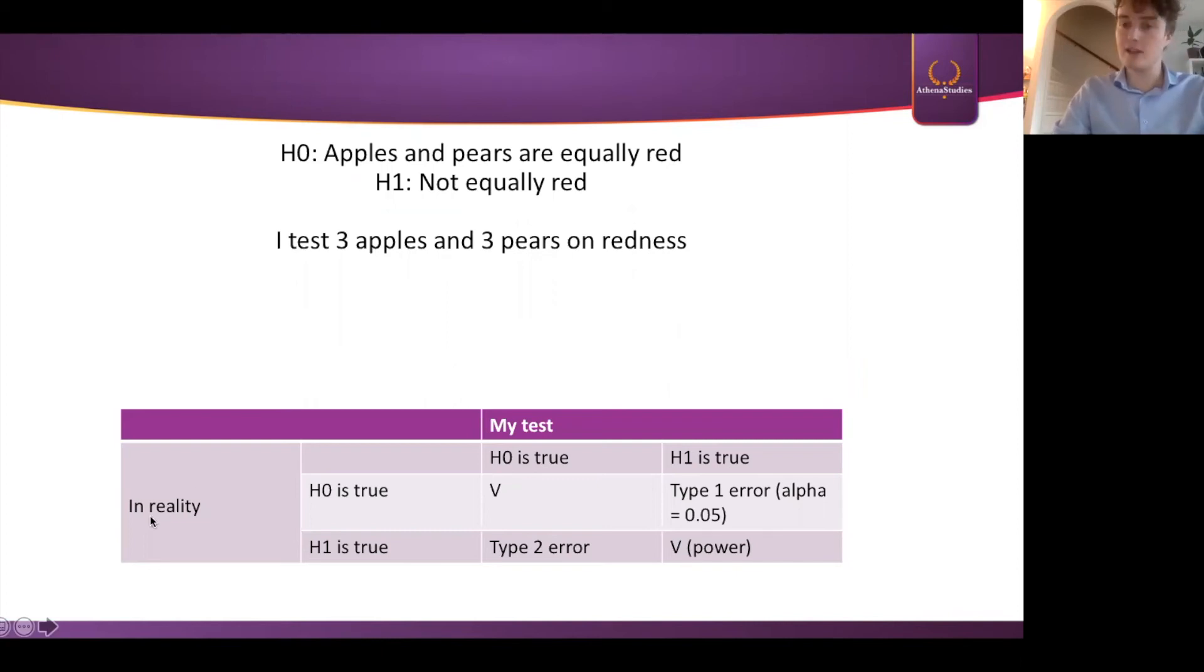Well, what could also be the case is that in reality H1 is true. So in reality there is an effect. They are not equally red. But my test says that H0 is true. It says there is no effect. So once again I made an error, right? And we call this the type 2 error. This is also called a beta. So this is alpha, this is beta.